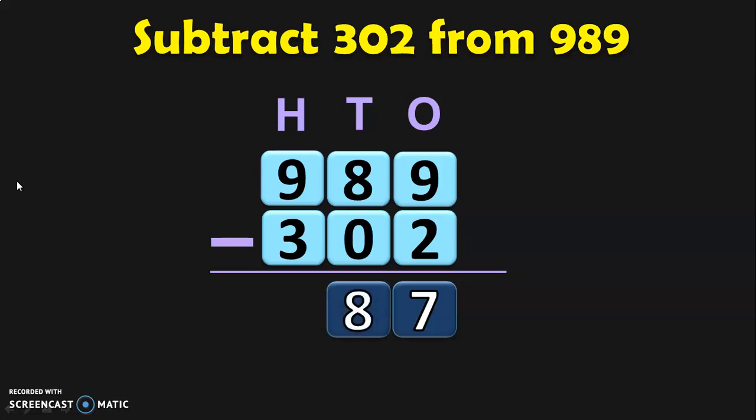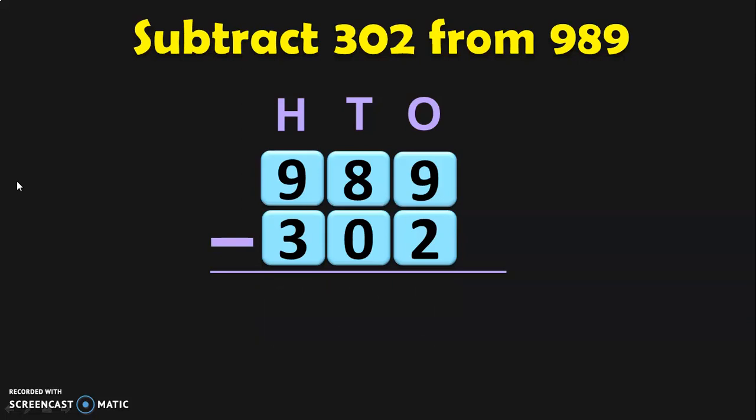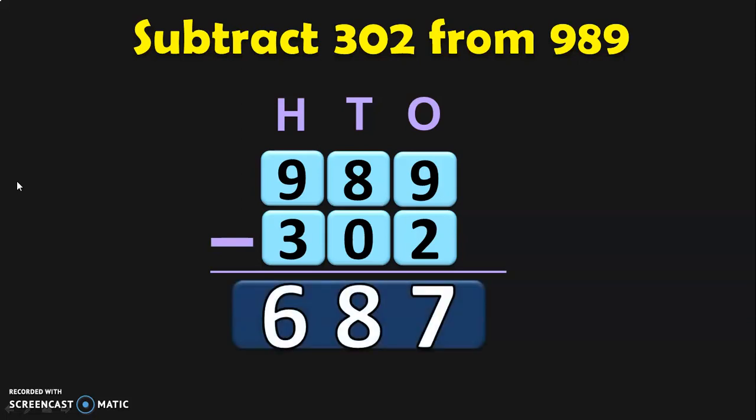Next, move on to the hundreds place where we have nine minus three. Nine in the mind, three in the fingers — before nine: eight, seven, six. So the difference between the two three-digit numbers is 687.